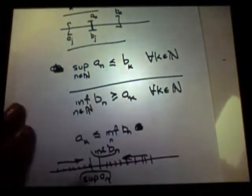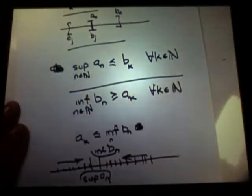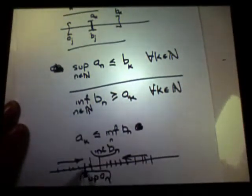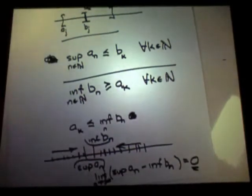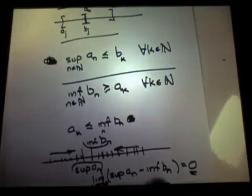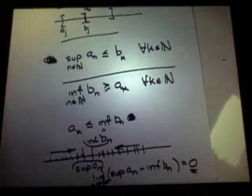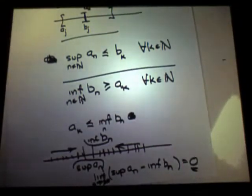The supremum of the ANs is greater than any particular AN. And the infimum of the BNs is less than any particular BN. And yet, the limit as N goes to infinity and the separation between these two must be zero. What does that force the difference between these two to be? It forces it to be zero as well. I mean, what else could happen?